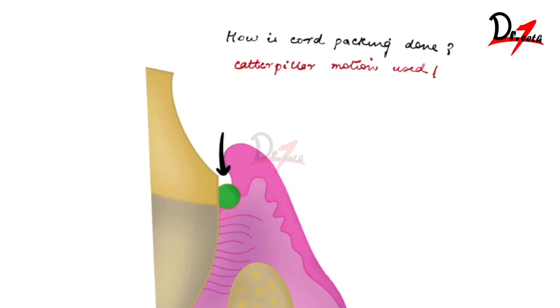Here we have our cord. Now we start packing the cord interdentally first. So tuck it interdentally because this area has a lot more space so that the cord can go inside and stay there.